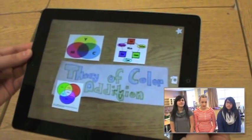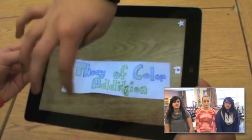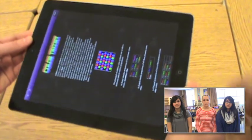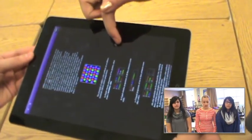Well, first we had to make sure that our word was done and then we decided that we had to find some type of websites that showed how color and light addition together to make different colors.